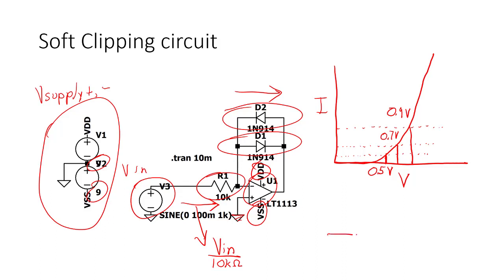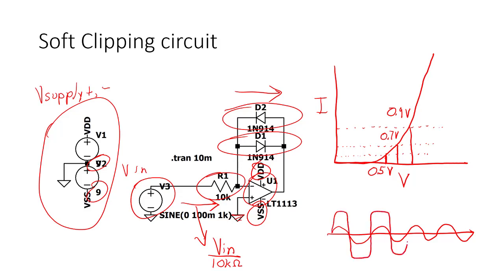So for an input signal that looks like a sine wave, the very small amplitude parts are going to be amplified a lot, and the high amplitude parts are going to be flattened out. So you get a signal out that looks clipped — and that's what clipping looks like.